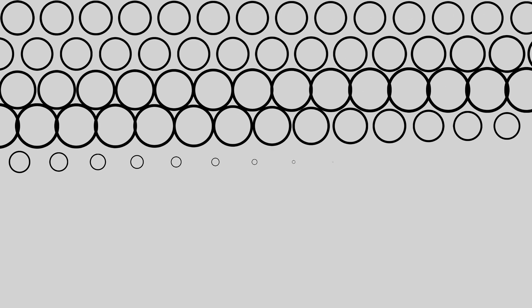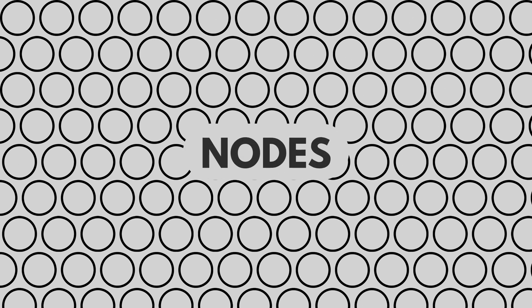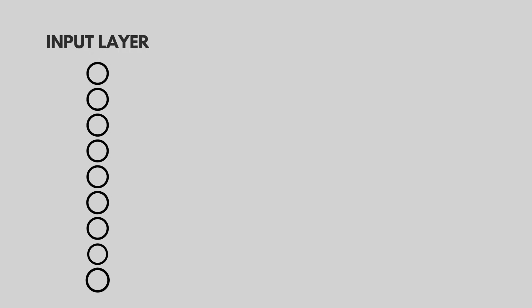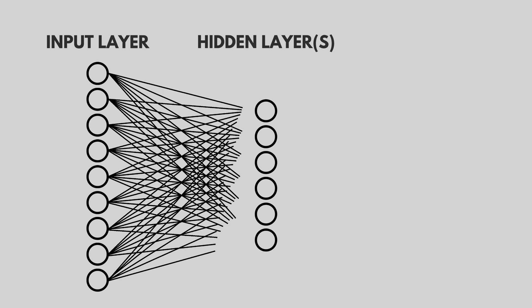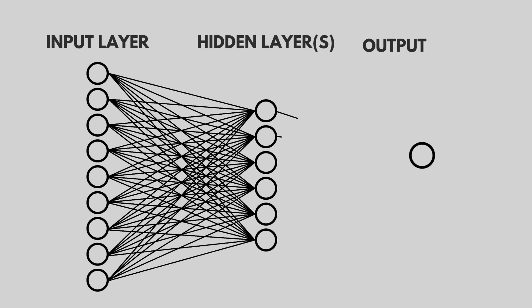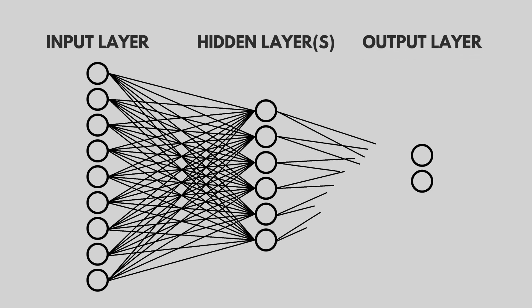A neural network consists of lots of layers of things called nodes. These are tiny processing units organized into three primary layers: the input layer where the data comes in, one or more hidden layers where the decisions or processing happens, and the output layer where we get our output.